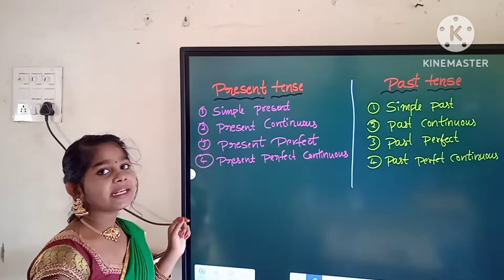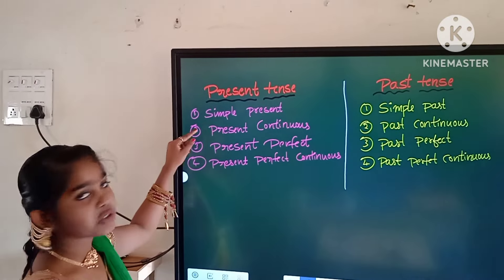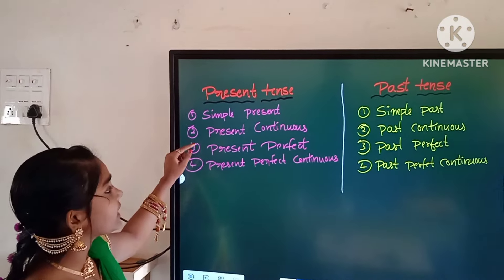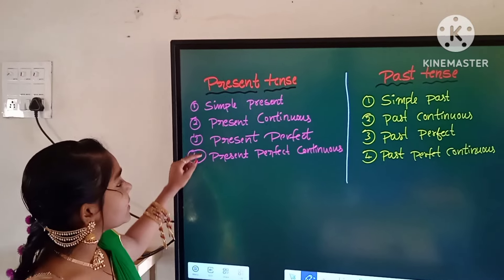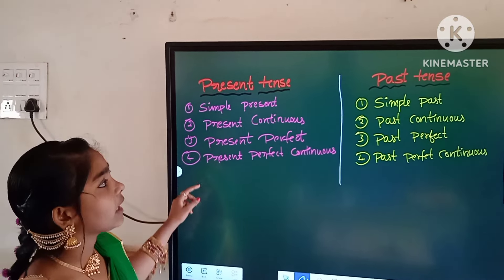Present tenses are mainly divided into four types. First one is simple present tense. Second one is present continuous tense. Third one is present perfect tense. Fourth one is present perfect continuous tense.